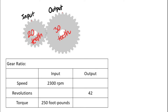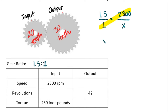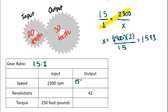Going back to our first situation: gear ratio is 1.5 to 1 (30-tooth output over 20-tooth input). To find output speed, we know gear ratio equals input speed over output speed. Input speed is 2,300 RPM. Setting up: 1.5 over 1 equals 2,300 over X. X equals 2,300 times 1 divided by 1.5, giving approximately 1,533 RPM. The bigger gear turns more slowly than the smaller gear — that makes sense.